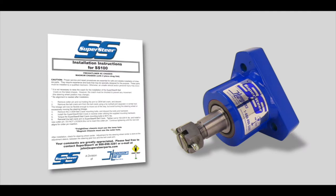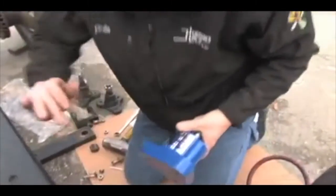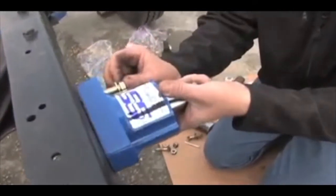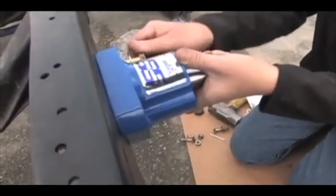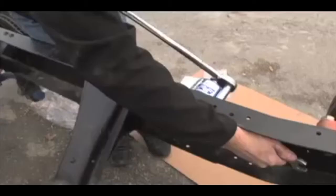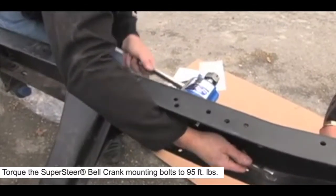So here's our new SS100 bell crank. With our instructions we've got the torque specifications. Make sure our surface is clean. Go ahead and insert our mounting bolts. Okay, so we'll go ahead and snug these down. Now we're going to go ahead and check the torque on these mounting bolts. They should be about 95 foot pounds.